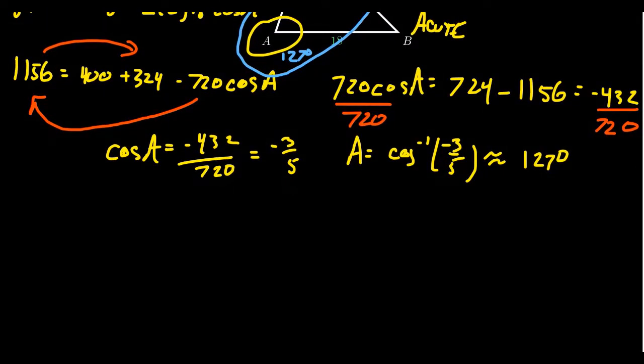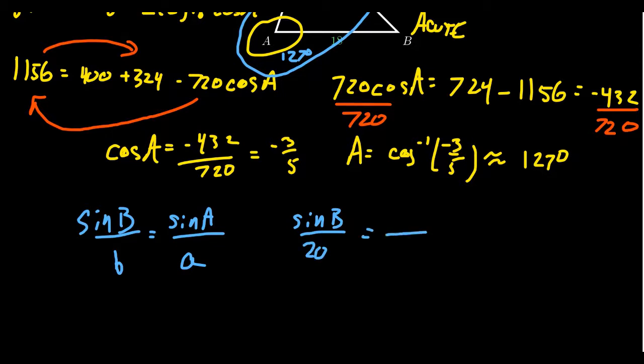To do the law of sines, let's find angle B next. We get sin B over little b equals sin A over little a. We don't know sine of B, but we do know the side length b, which is 20. We know the side length for a was 34. Do we know sine of A? Well, we know A is 127 degrees.